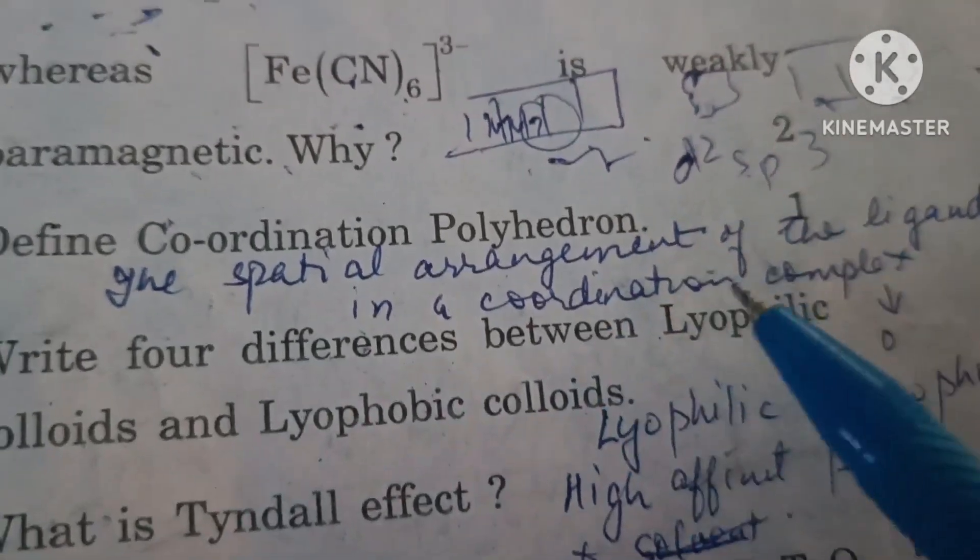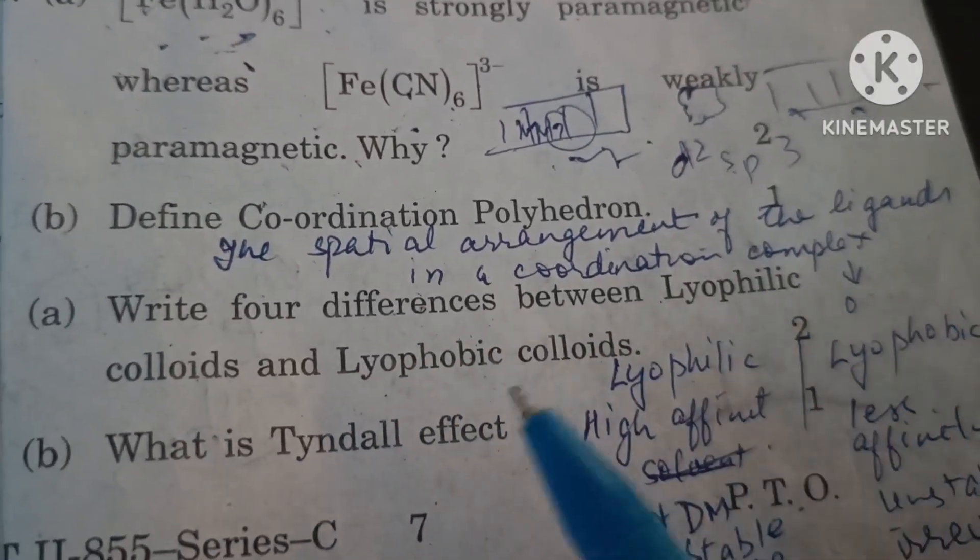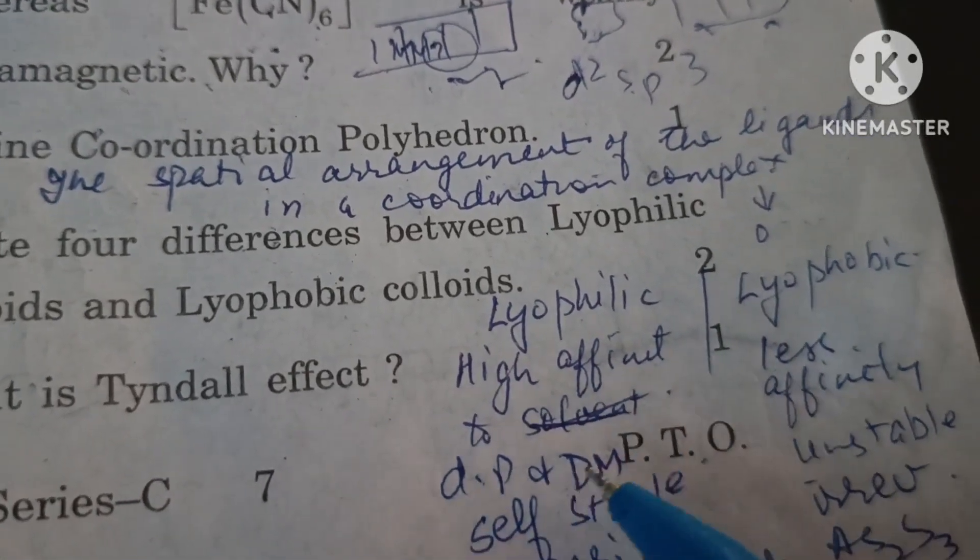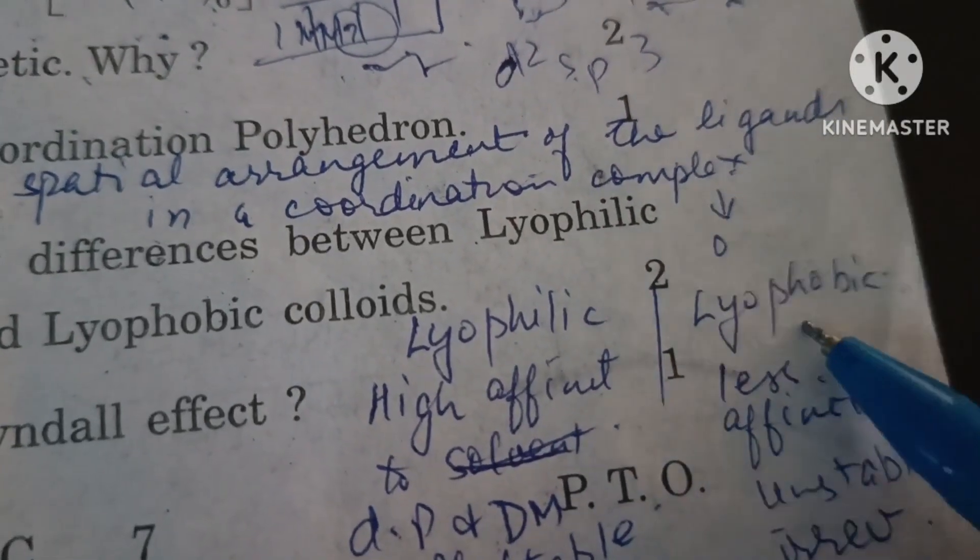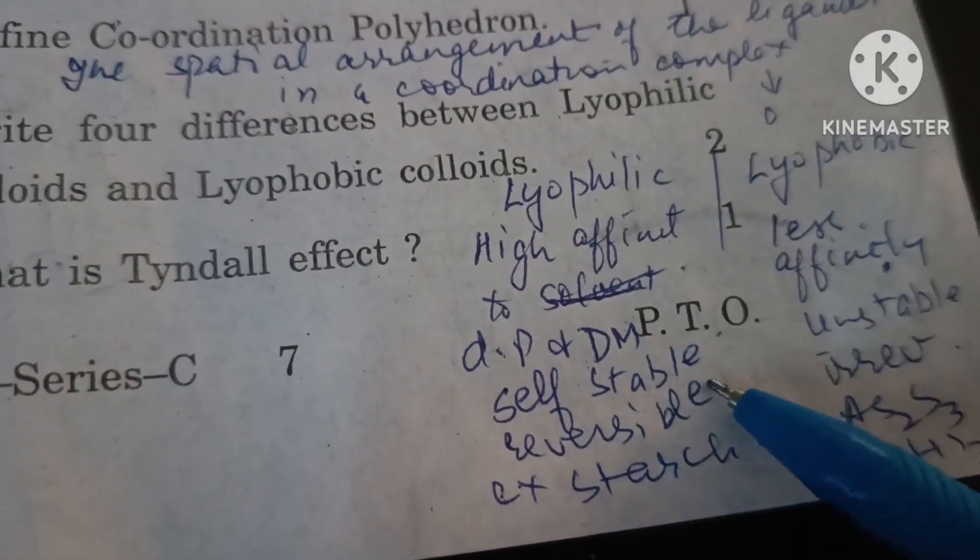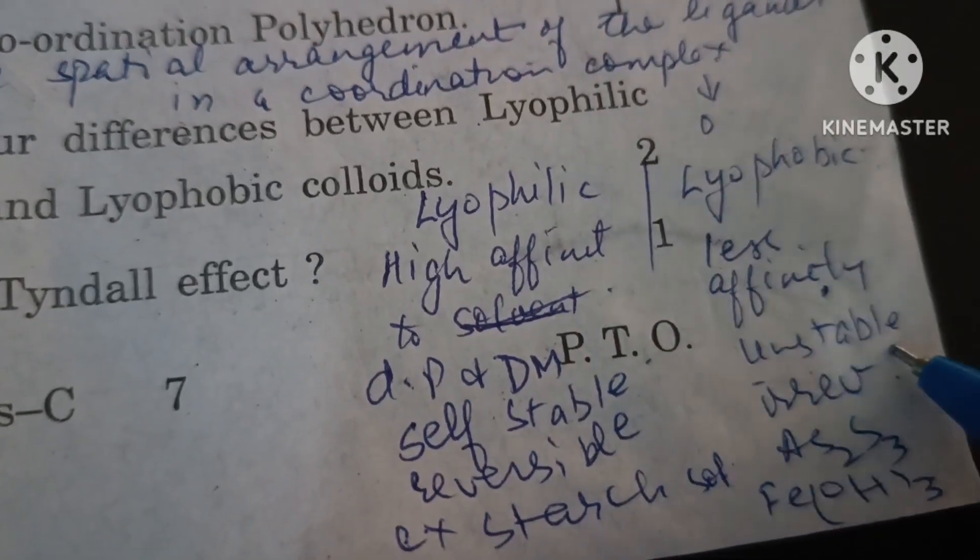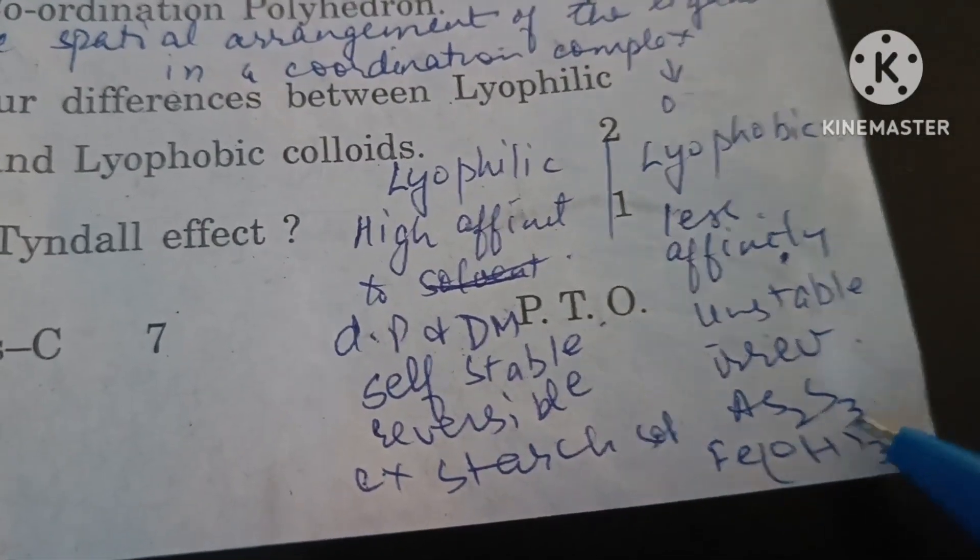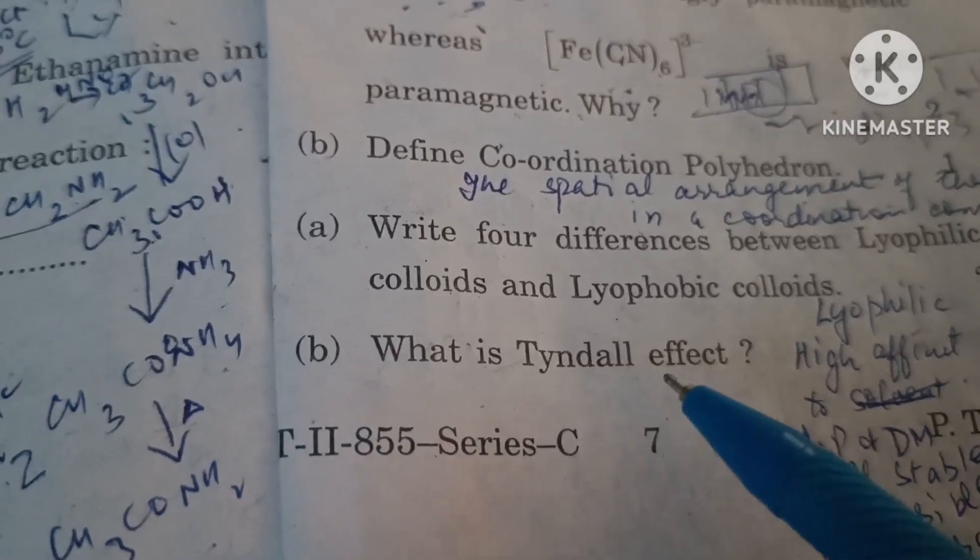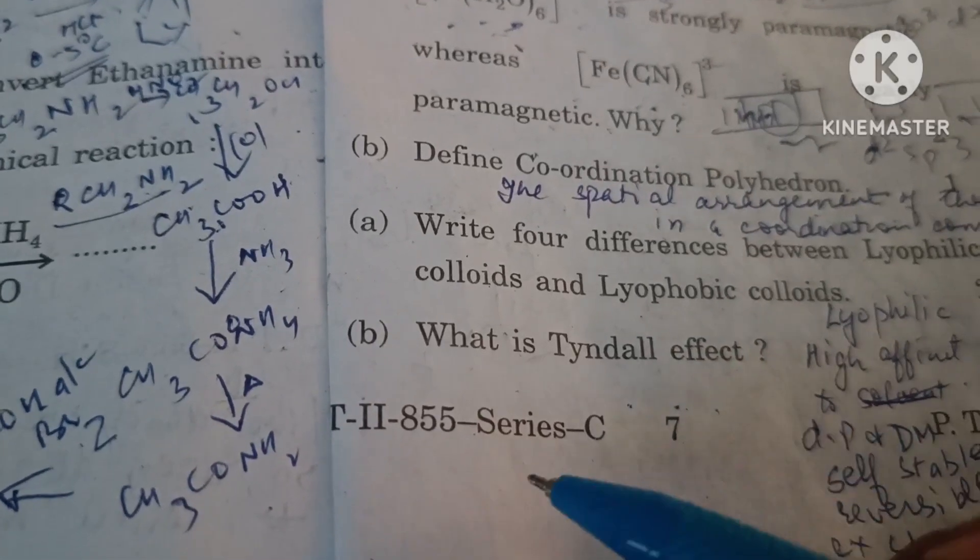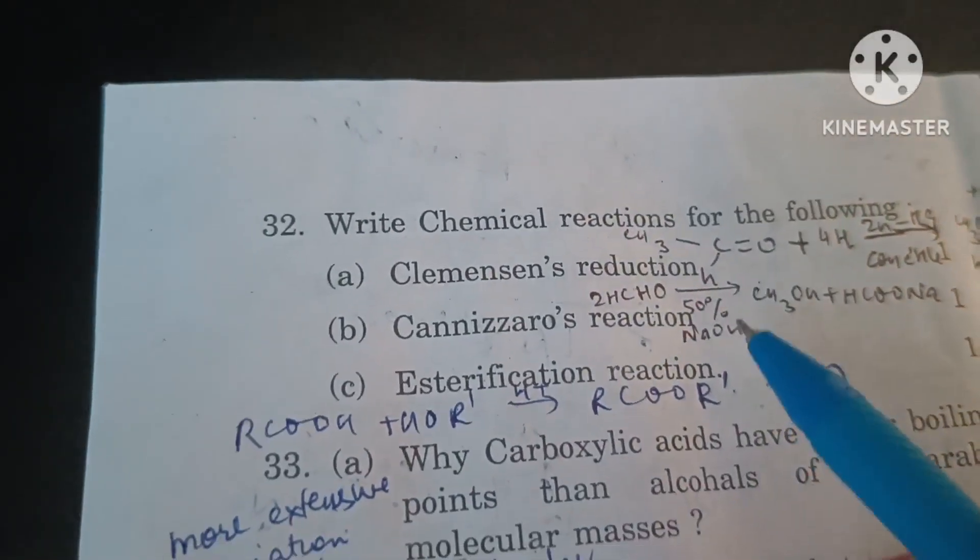Write four differences between lyophilic colloids and lyophobic colloids. Lyophilic colloids: there is high affinity between dispersed phase and dispersion medium. Lyophilic colloids are self-stable whereas lyophobic colloids are unstable. These are reversible, these are irreversible. Example: starch sol. Example: arsenous sulfide or ferric hydroxide sol. What is Tyndall effect? The scattering of light by particles of colloids into a bluish cone is called Tyndall effect.